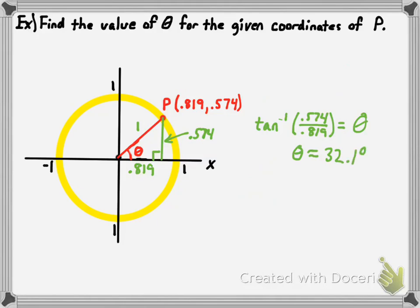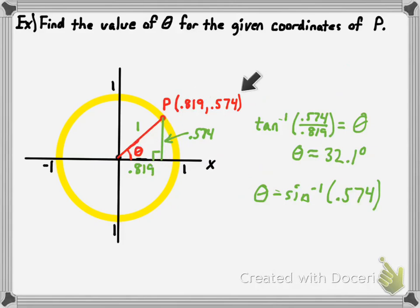I didn't have to use tangent inverse — I could have said theta equals the sine inverse of 0.574, since sine of theta equals 0.574 over 1. That also gives 32.1 degrees. Or theta equals the cosine inverse of 0.819 using the x-coordinate. You can use the x-coordinate with cosine inverse, or the y-coordinate with sine inverse to find the angle — cosine inverse is often the better way to go. So now you hopefully have a good understanding of the relationship between standard position angles, the unit circle, and trigonometry. Thanks for watching; I'll see you next time.